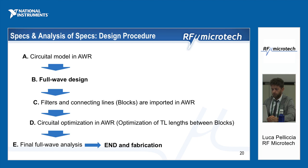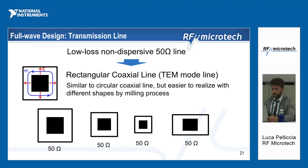I will now show you the full wave model of these notch filters. The first thing is the transmission lines we decided to use. The idea was to use a low-loss, non-dispersive 50-ohm line — a line with a characteristic impedance of 50 ohms — to be connected directly to the connectors, which also have a characteristic impedance of 50 ohms.